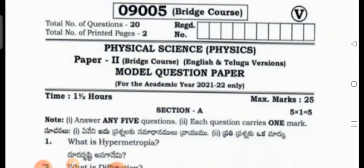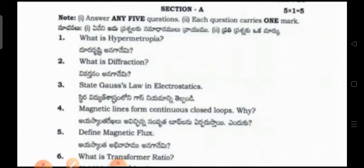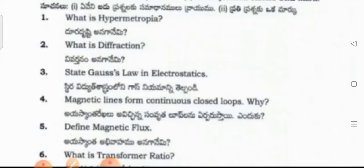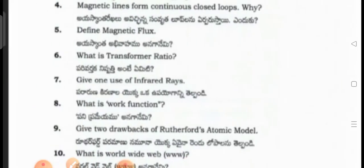The physics Section A questions include: What is diffraction? State Weaver's law and electrostatics. Magnetic lines form continuous closed loops. Define magnetic flux. What is transformer ratio? Give one use of infrared rays. What is work function? Give two drawbacks of Rutherford's atomic model. What is the worldwide web?